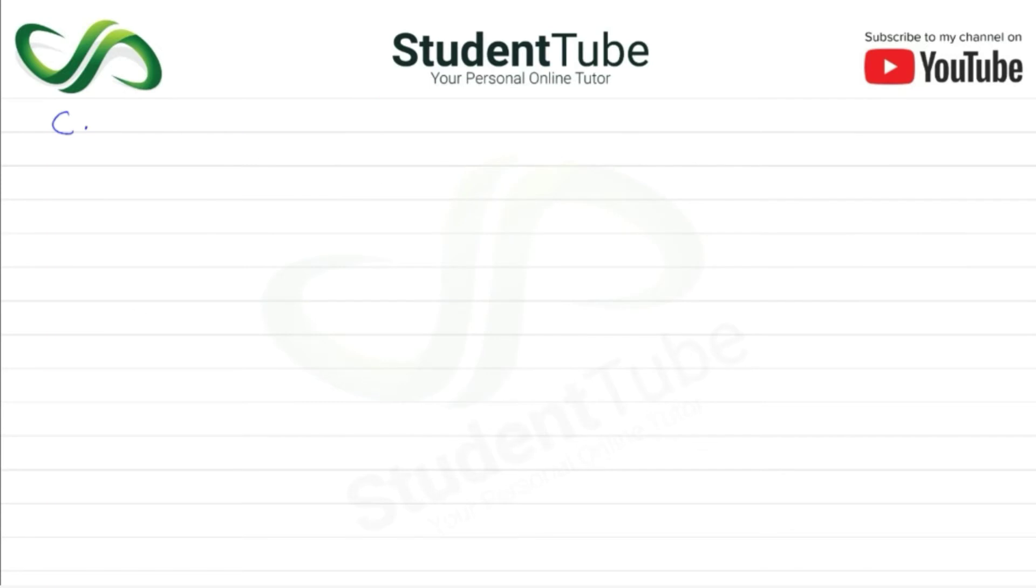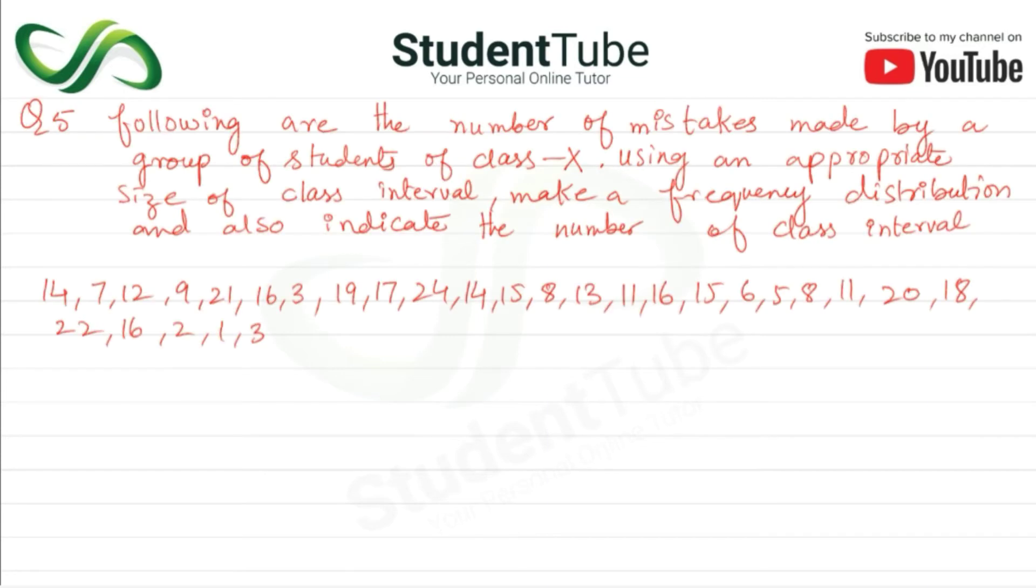Let's create a class interval first. So first of all, class interval. Then here we will have the entries, then number of mistakes. And also frequency - the frequency will be the same. So first of all, we have to arrange data. Let's arrange data first.